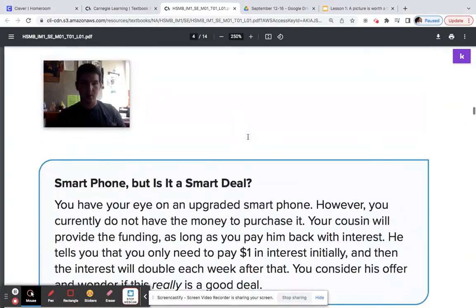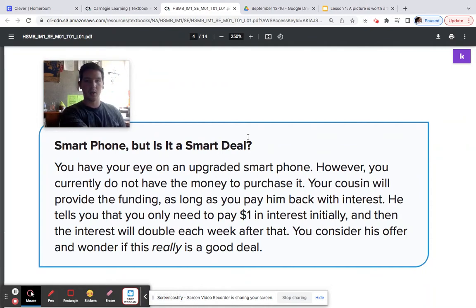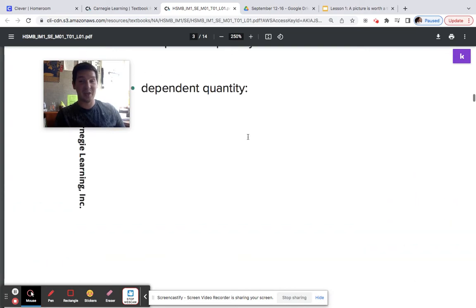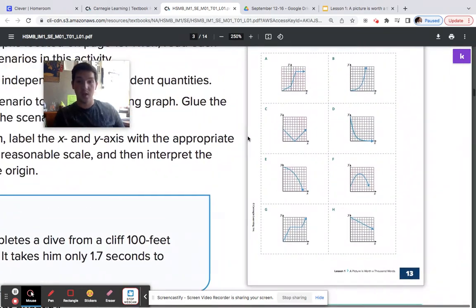All right, let's do one more here. You have your eye on an upgrade smartphone. However, you currently do not have the money to purchase it. Your cousin will provide funding as long as you pay him back with interest. He tells you that you only need to pay $1 in interest initially, and then the interest will double each week after that. You consider his offer and wonder if this really is a good deal. So we're starting at zero, and our interest, this is looking at a graph that represents our interest here. So we're starting at zero.